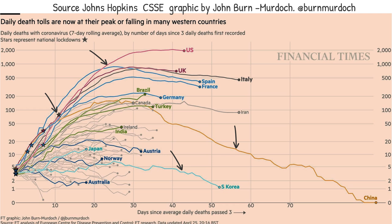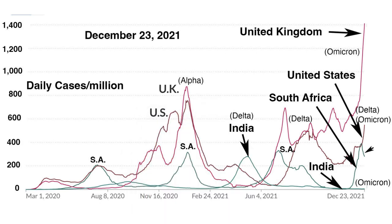Here are the current epidemiology curves for the United Kingdom, the United States, South Africa, and India. The vertical axis is the number of daily cases per million, a seven-day average, and the horizontal axis is days. Note the steep rise in cases last January in the U.S. and the United Kingdom. In the U.S., too many people ignored CDC recommendations to stay home for the holiday and traveled to visit family for Christmas and New Year's. The peak during that period was 270,000 cases per day and 3,000 to 4,000 deaths per day.